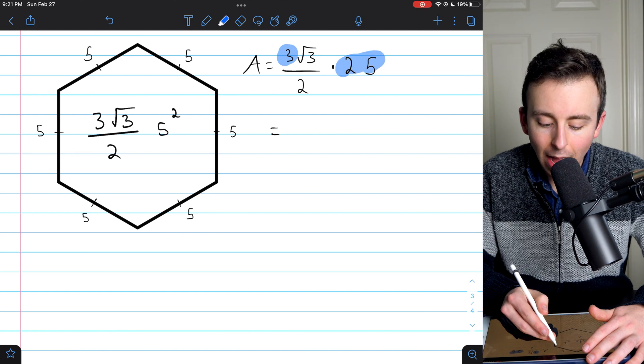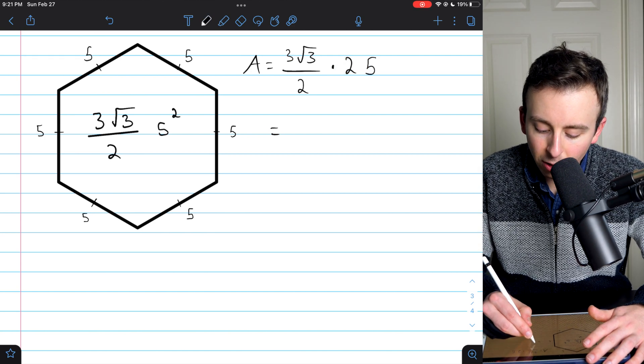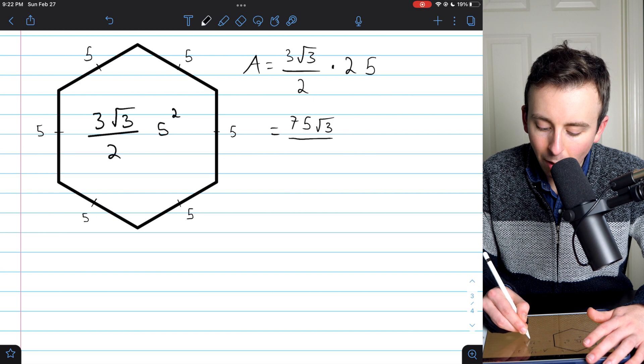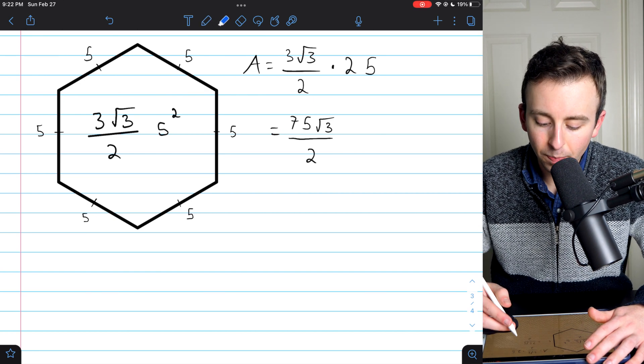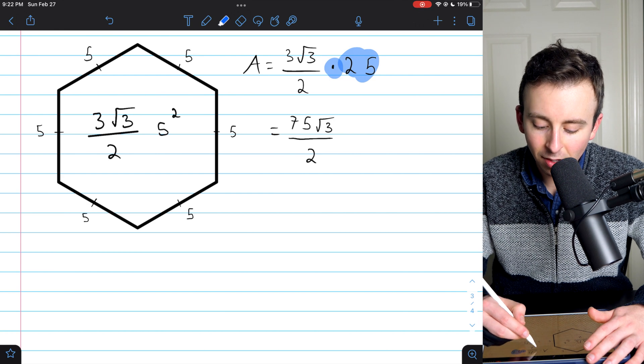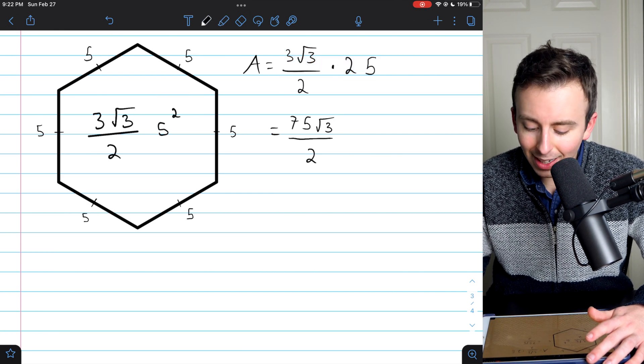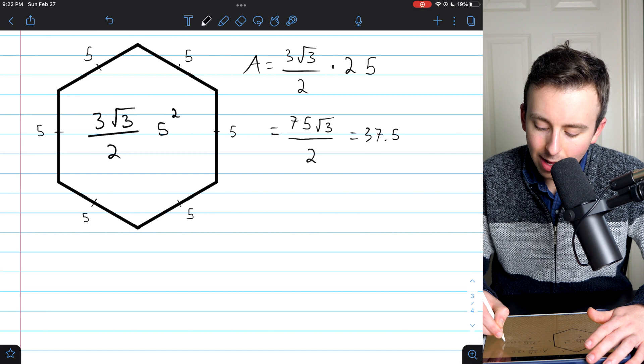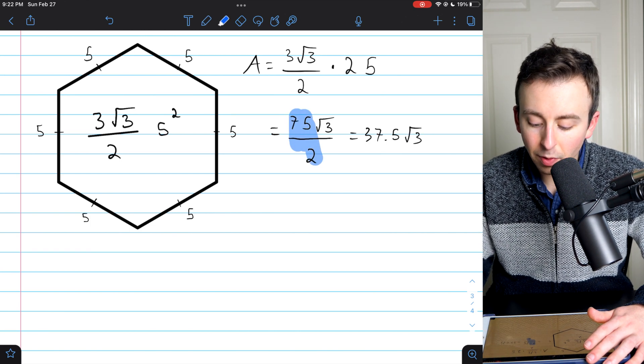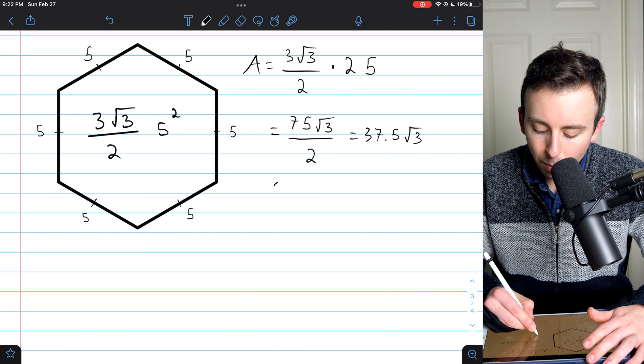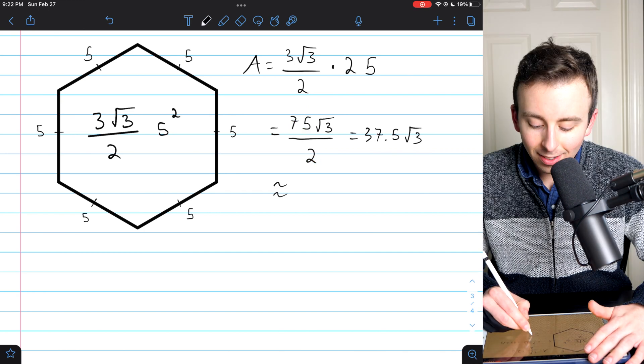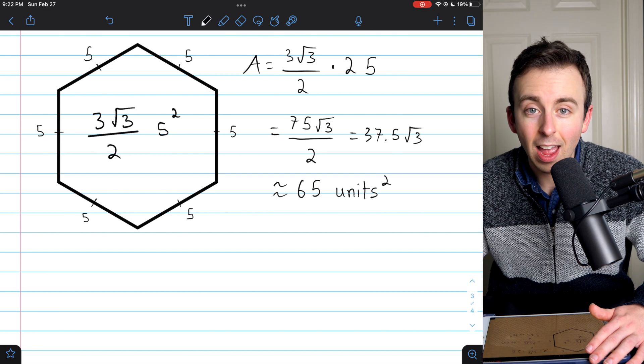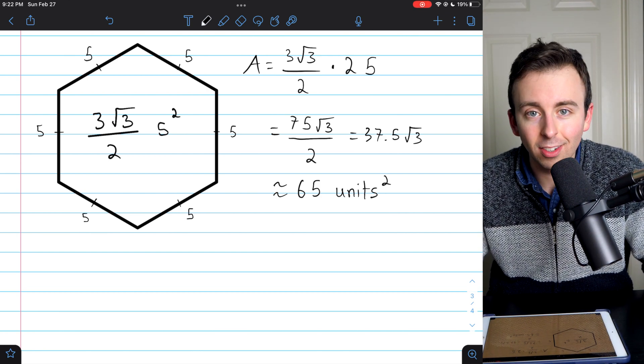I'm going to rewrite this by doing 3 times 25. I'm bringing the 25 into the fraction, and that's going to make this 75 root 3 over 2. We had 25 times 3 root 3 over 2. If you like decimals, this is equal to 37.5 root 3. That's just doing 75 divided by 2. And then if you want an approximation, this is approximately 65 units squared. Whatever the units happen to be, area is a square unit.